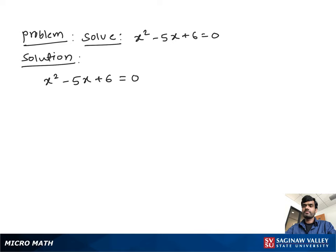To find the factor we need to multiply the coefficient of x square, which is 1, with the constant 6. We get 6, and then the factors of 6 are 1 and 6, and 2 and 3.